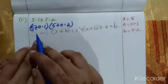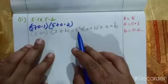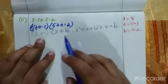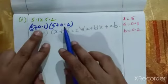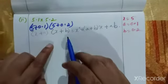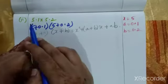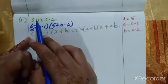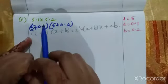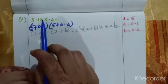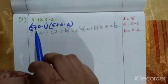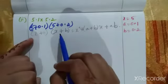The identity is: (x+a)(x+b) = x² + (a+b)x + ab. We can multiply directly, but since the question asks us to use the (x+a)(x+b) formula, we must apply this identity. So do not simply multiply 5.1 into 5.2 directly — use the formula.